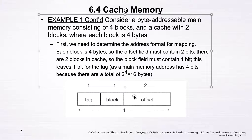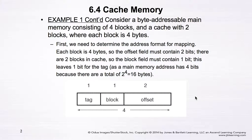So the graphical representation of the address fields is: tag is one bit, block is one bit, and offset is two bits — four bits total to represent one address in main memory.